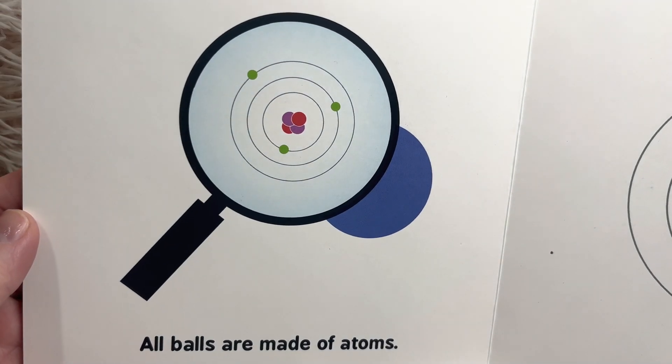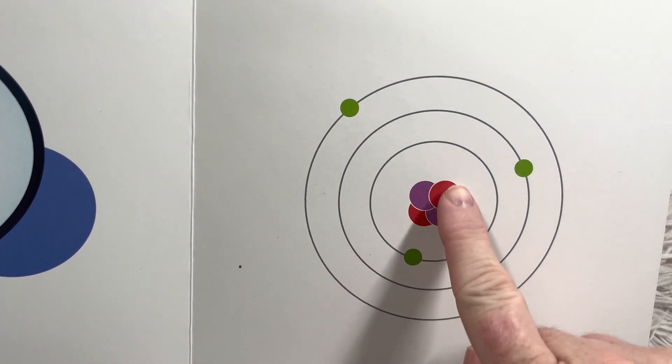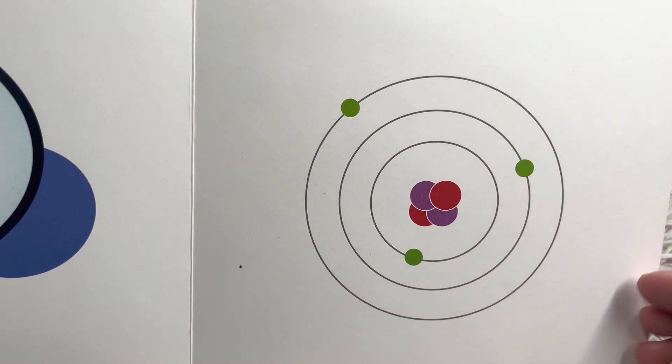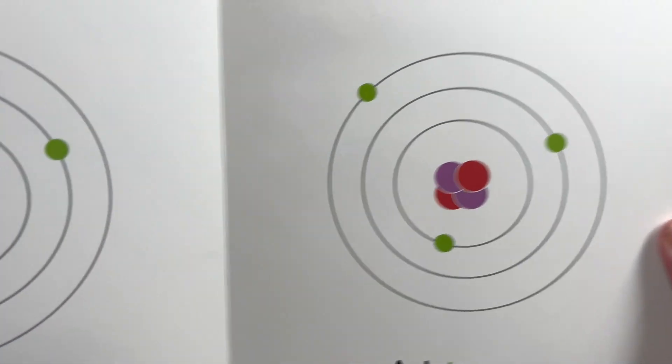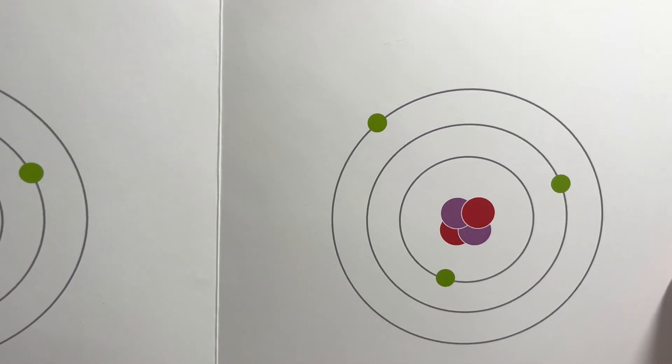All balls are made of atoms. So these are atoms. These are neutrons and protons and electrons.